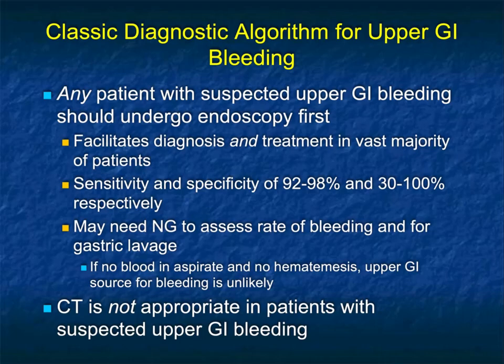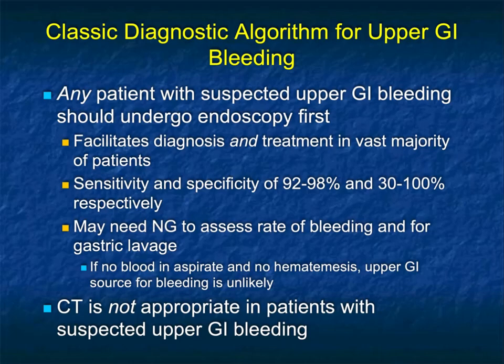When thinking about upper GI bleeding, any patient with suspected upper GI bleeding should typically undergo endoscopy first. It facilitates diagnosis and treatment in the vast majority of patients, with sensitivity and specificity of up to 98% and 100% respectively. Nasogastric tube assessment of the rate of bleeding and gastric lavage may be needed. If there is no blood in the aspirate and no hematemesis, an upper GI source is unlikely. CT is typically considered not appropriate for patients with upper GI bleeding.